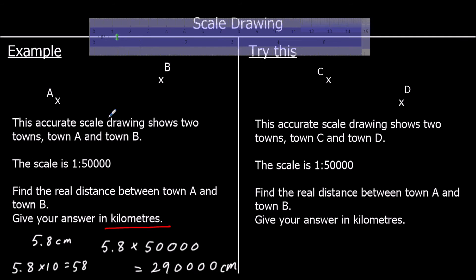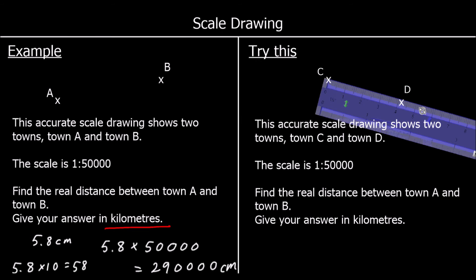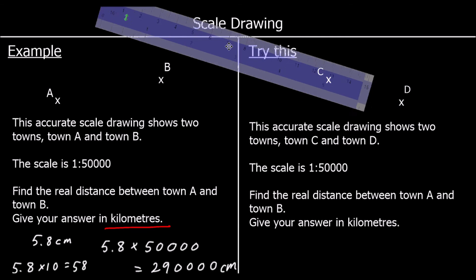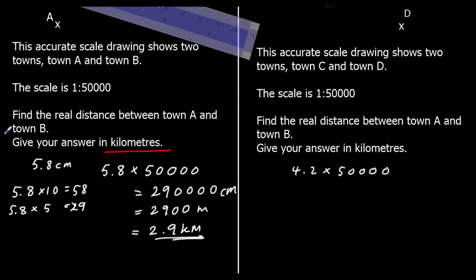Here's one for you to try — I'll do the measuring. We're going from C to D this time, and it looks like we have 4.2 cm. So the distance on the map is 4.2 cm. The scale is 1 to 50,000. Find the real distance between the towns. We need to multiply 4.2 by 50,000 to get the real distance, since the real distance is 50,000 times as much.